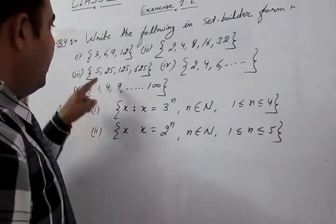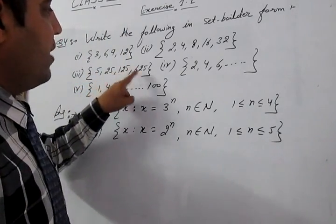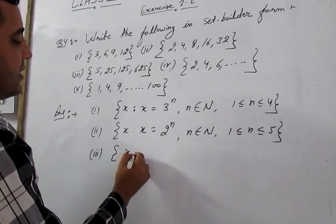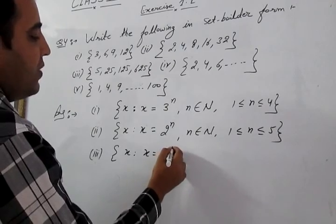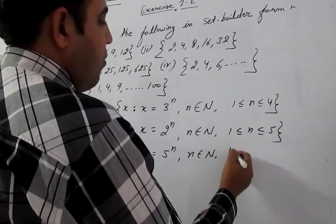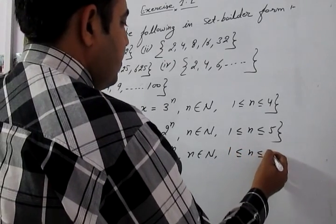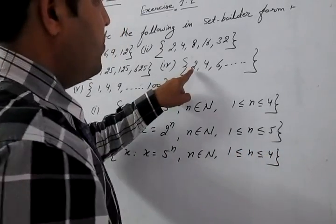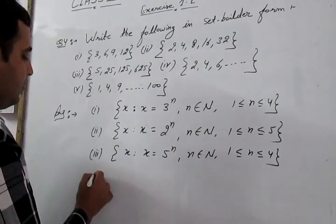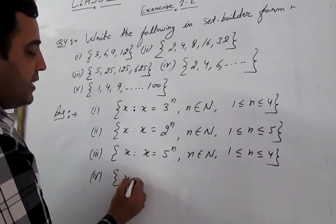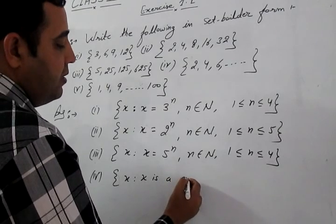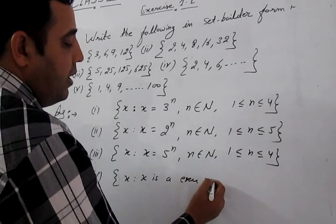Part 3: given {5, 25, 125, 625}. We write: x such that x = 5ⁿ, where n ∈ N and 1 ≤ n ≤ 4. Part 4: given {2, 4, 6, …}. This is an infinite set, so we write: x such that x is an even natural number.